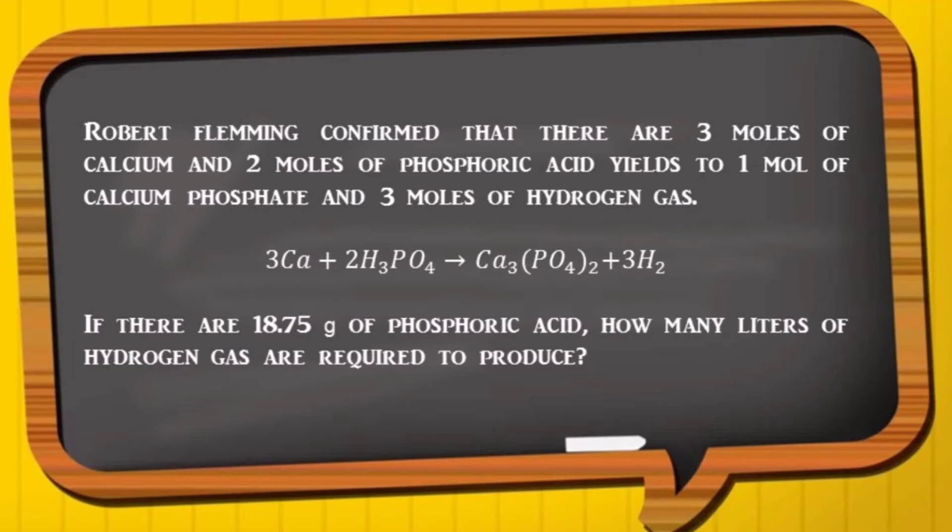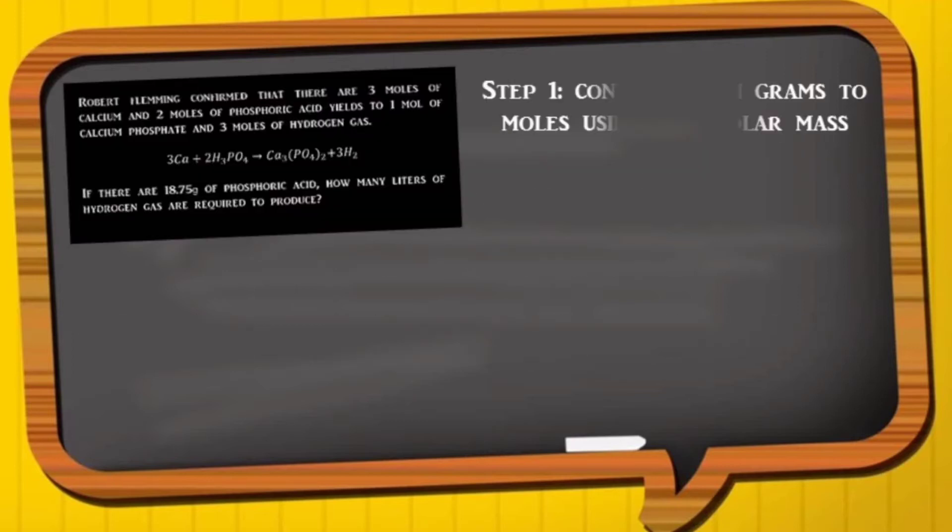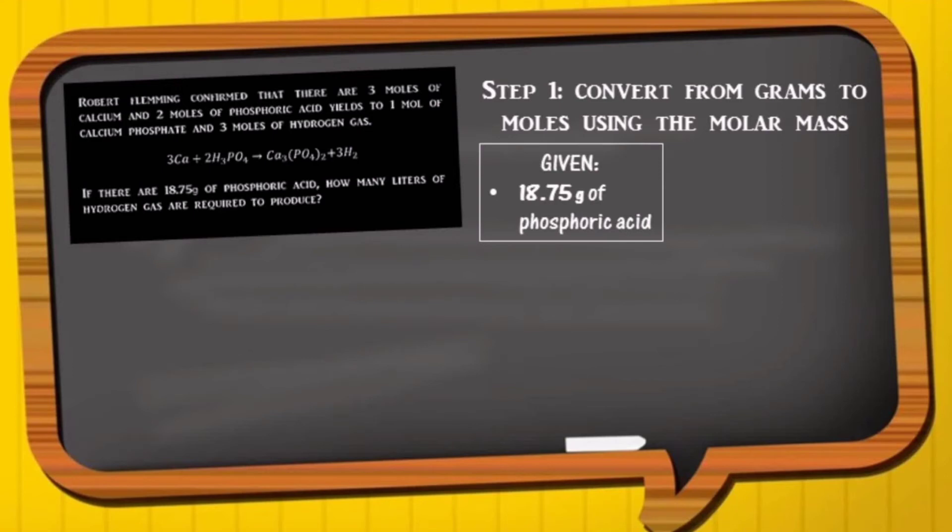To find the volume of the hydrogen, we need to convert from grams to moles using the molar mass. So the given is 18.75 grams of phosphoric acid and we convert using the molar mass.